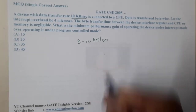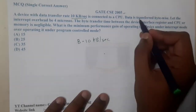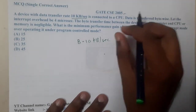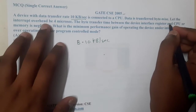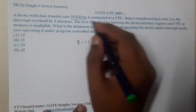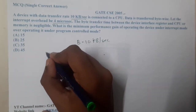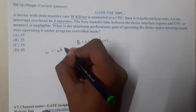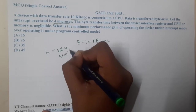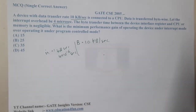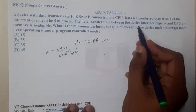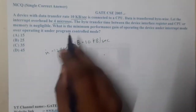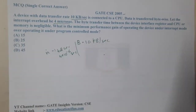The device is connected to a CPU and data is transferred byte-wise, i.e., byte by byte. The interrupt overhead is 4 microseconds — that is 4 × 10⁻⁶ seconds. The byte transfer time between the device interface register and CPU or memory are negligible.